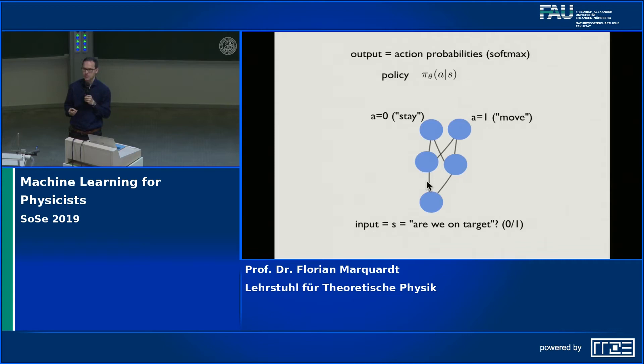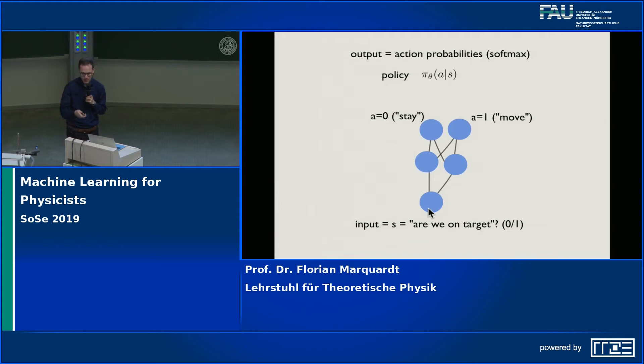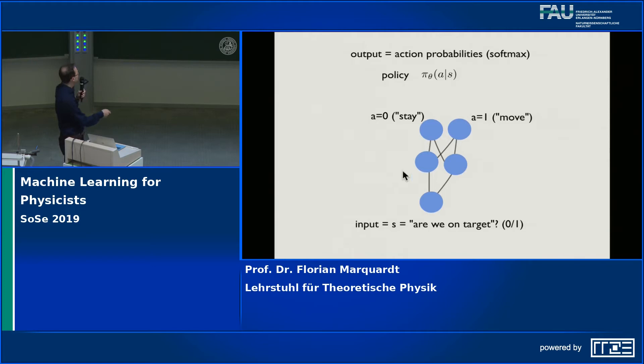This is still very simple — one neuron for the state and two neurons for two actions — but this is really the same principle used in very advanced settings. In advanced cases the input would be a full image with as many neurons as there are pixels, the output would represent many more actions, and you would have many more hidden layers. But this is the principle.